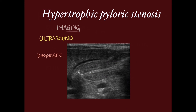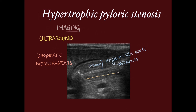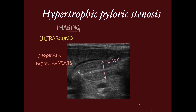The diagnostic measurement criteria are as follows: single pyloric muscle wall thickness more than 3 mm, the length of the pylorus more than 15 mm, and the entire pyloric transverse diameter should be more than 12 mm.